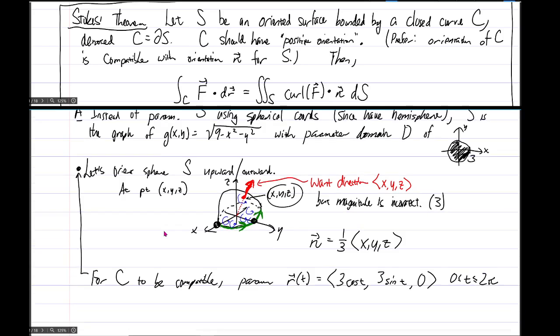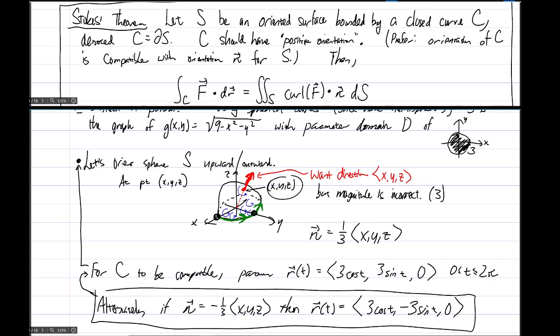Let's just comment for a moment, make the remark that alternately, if we had oriented the sphere the other way, so if we had oriented inward, that is, if n happened to be the vector negative one-third times vector x, y, z, then a compatible orientation for the circle would need to go in the other direction, and we could do that, for instance, by flipping the y-coordinate and having 3 cosine t, negative 3 sine t, 0. But we're not going to actually do this here. So let's just kindly cross that, like this is true, but it's just a comment.